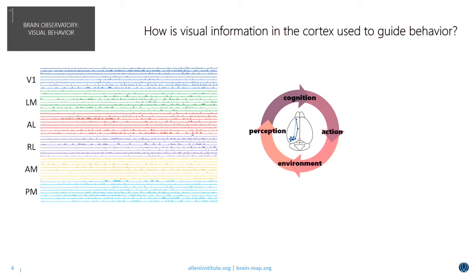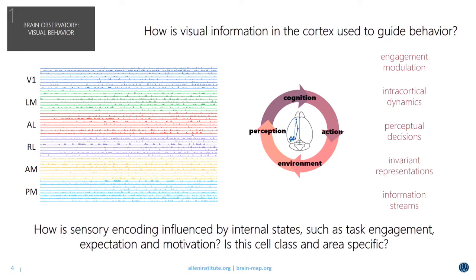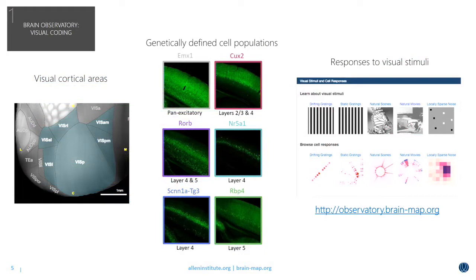The goal of the Visual Behavior Project is to understand how visual information is used to guide behavior. We aim to generate maps of activity across large populations of neurons across different cortical areas and share this information with the neuroscience community. The first iteration of this project will be focused on how sensory encoding is influenced by behavior states — such as task engagement, expectation, and motivation — and whether this is cell class and area specific.